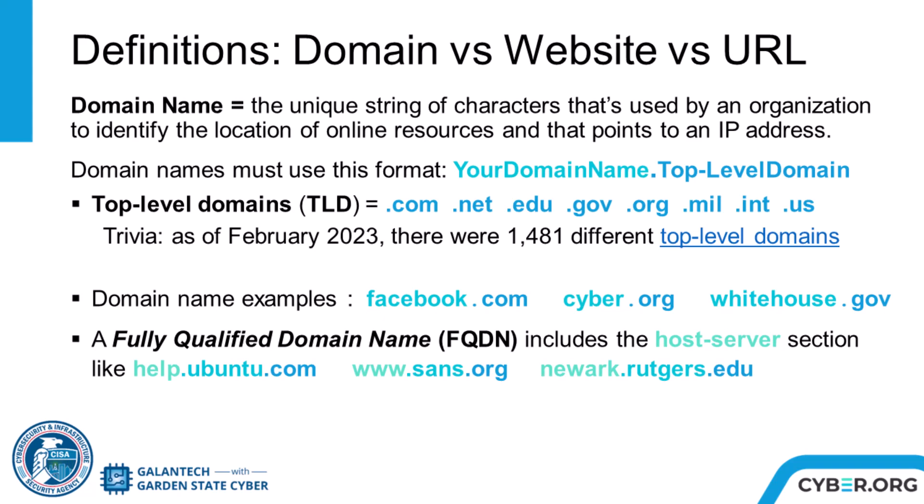One thing to be aware of is that a domain can contain several websites. Top-level domains include .com, .edu, .gov, .military, and countless more. They can also indicate a country code, like .uk for United Kingdom, .it for Italy, .au for Australia, and many more. As of February 2023, there were 1,481 different top-level domains.